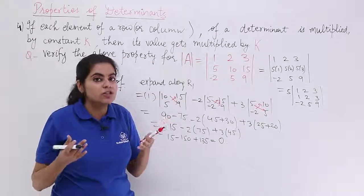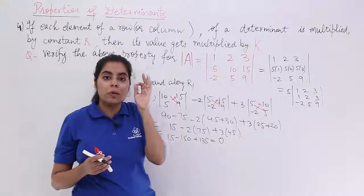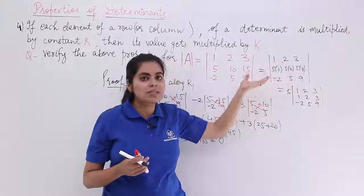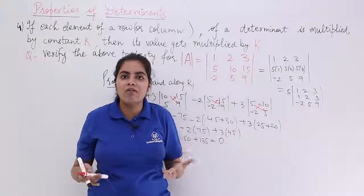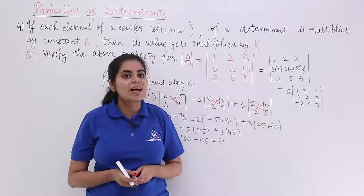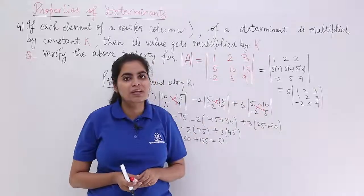So if such question comes in your exam, you don't need to solve this. You just need to remember the previous properties and this property. This 5 is coming in every element. Let's take out 5 common. Now we have 2 rows equal. The identical rows will give me a 0 determinant value. And that 0 multiplied by 5 will give me 0.